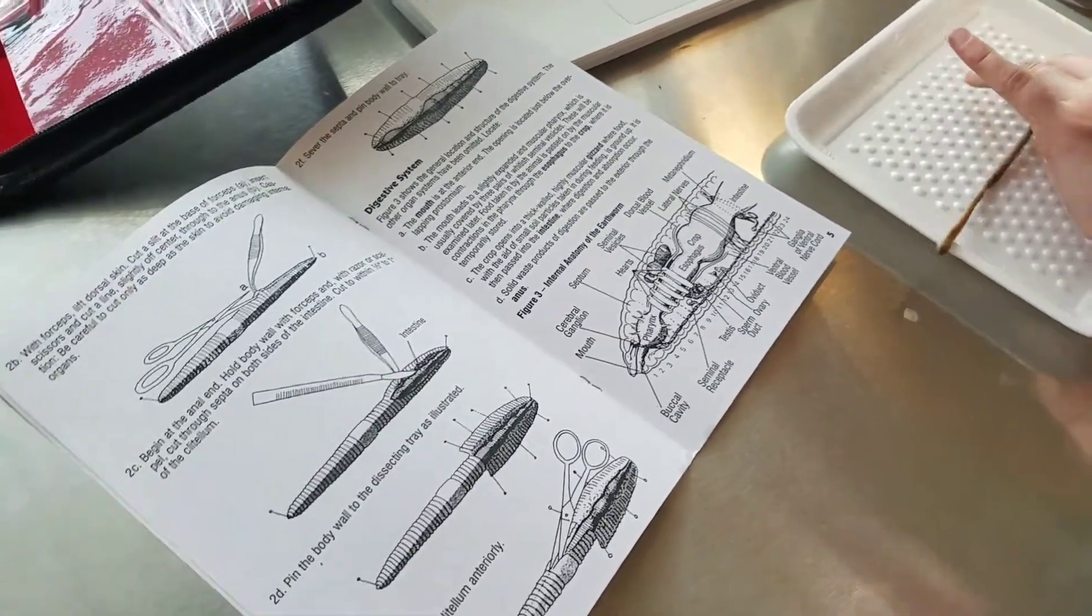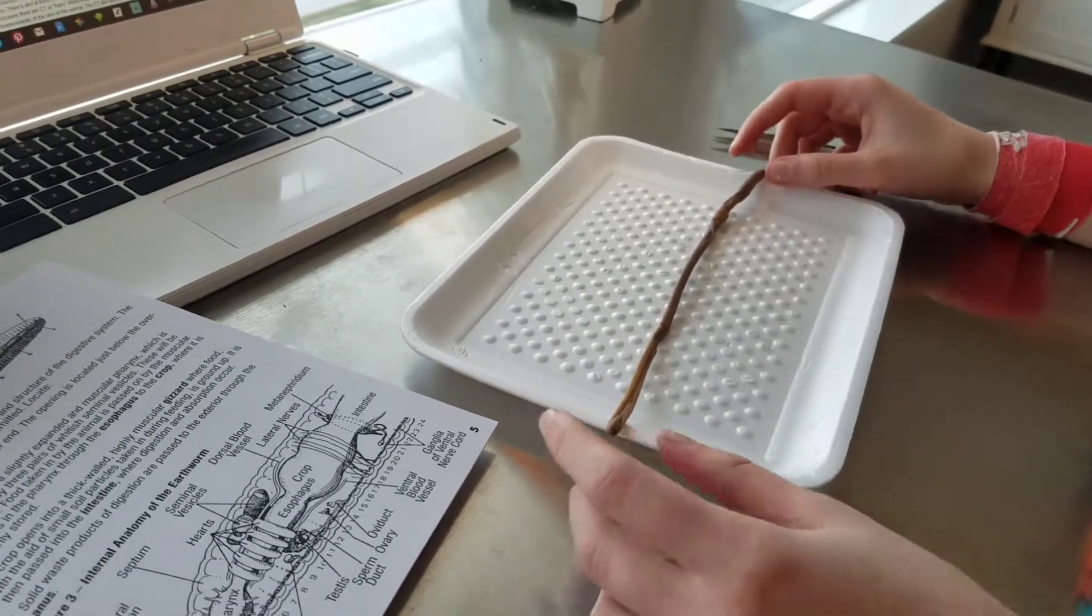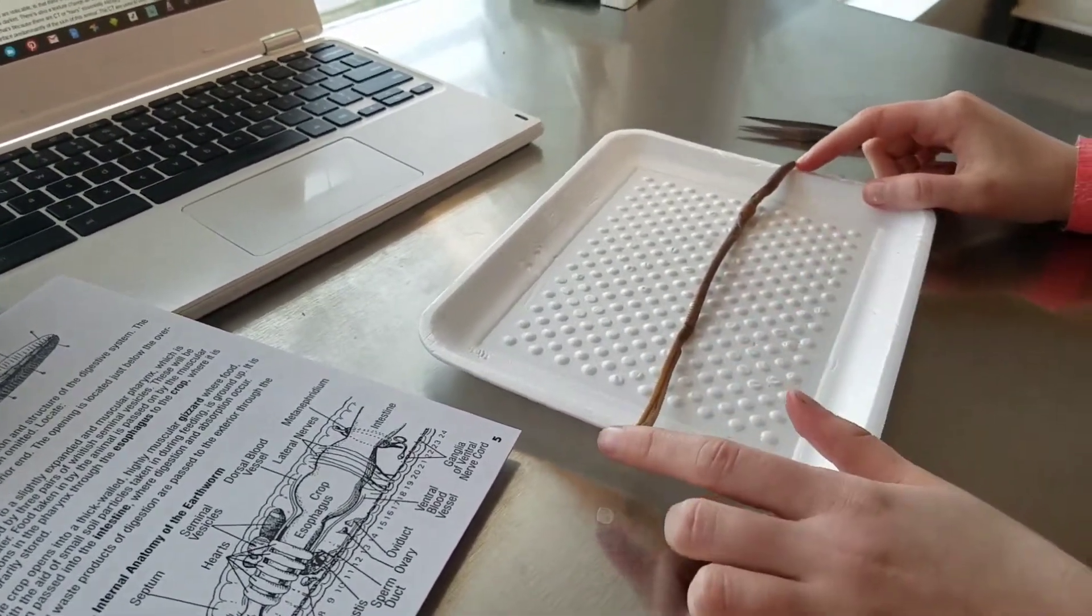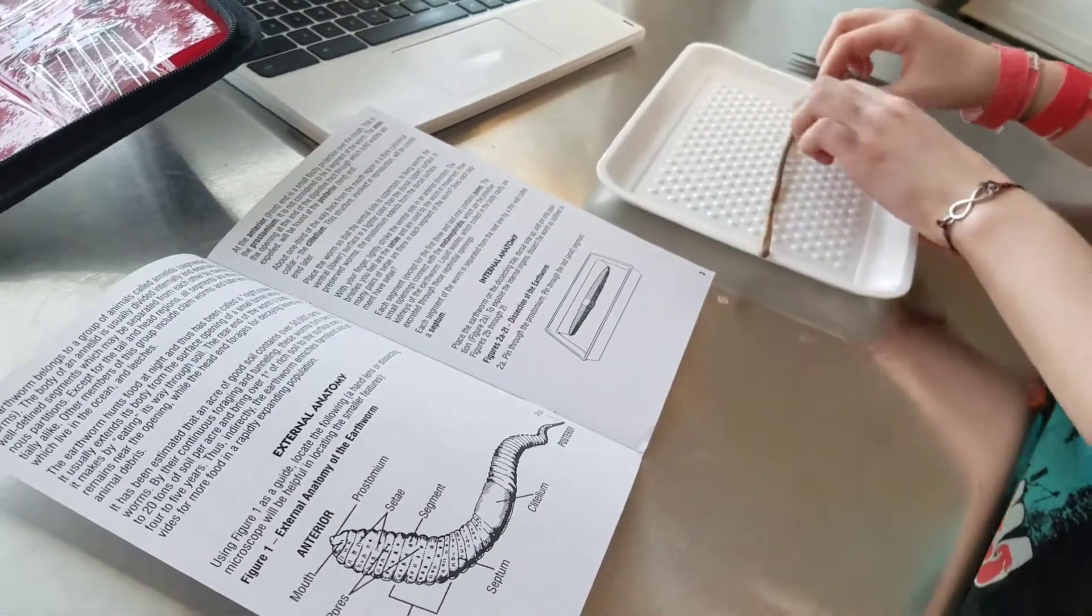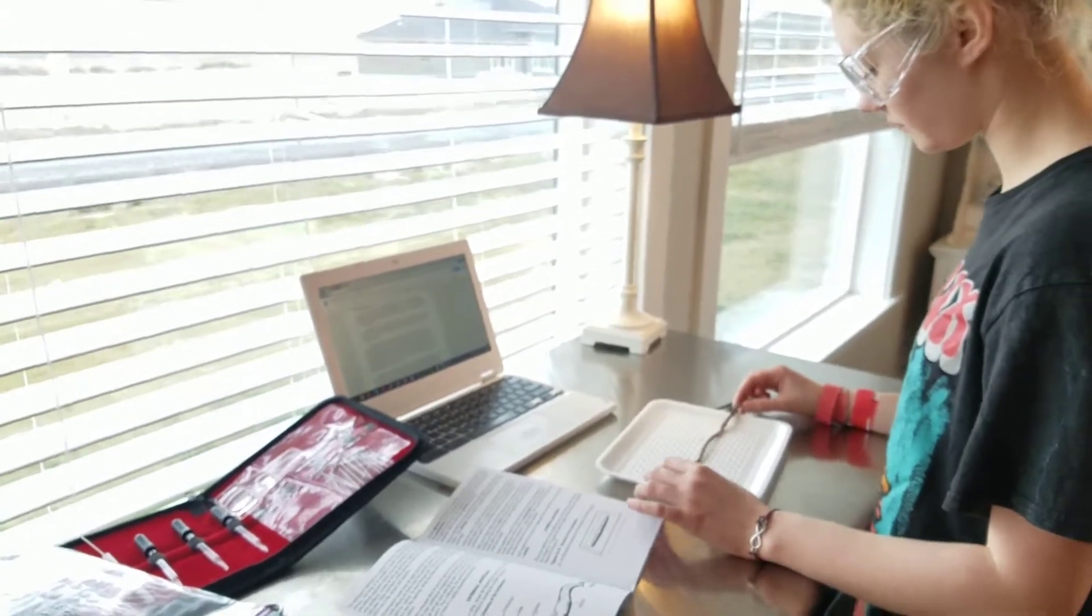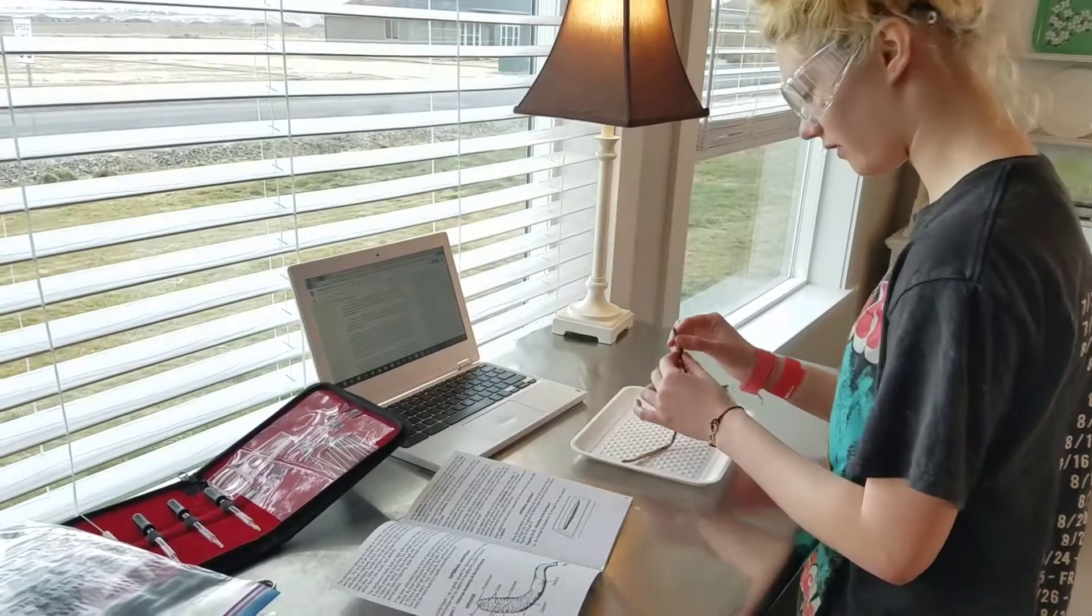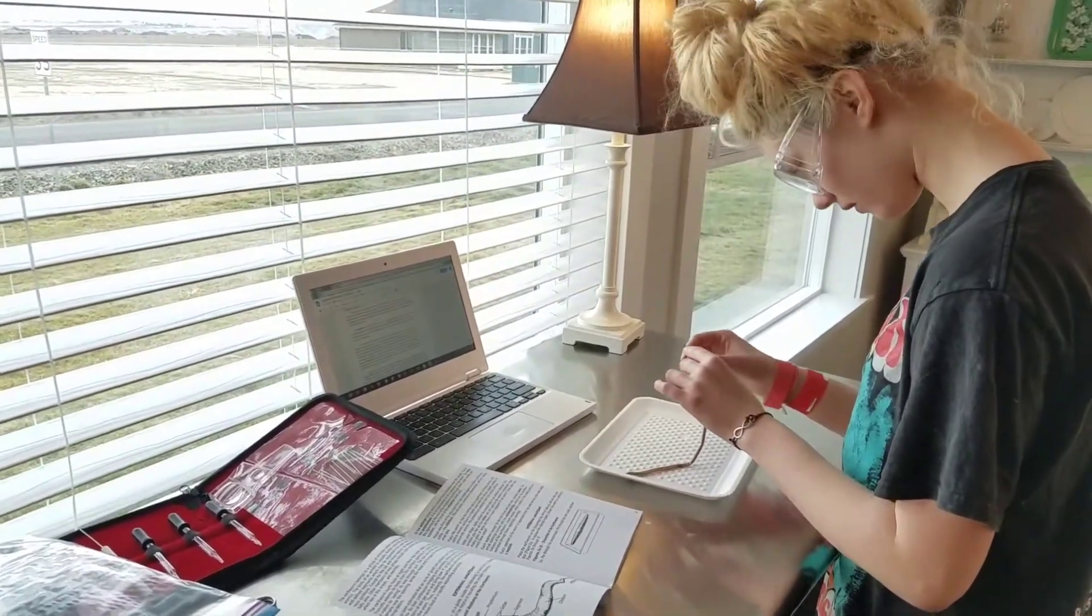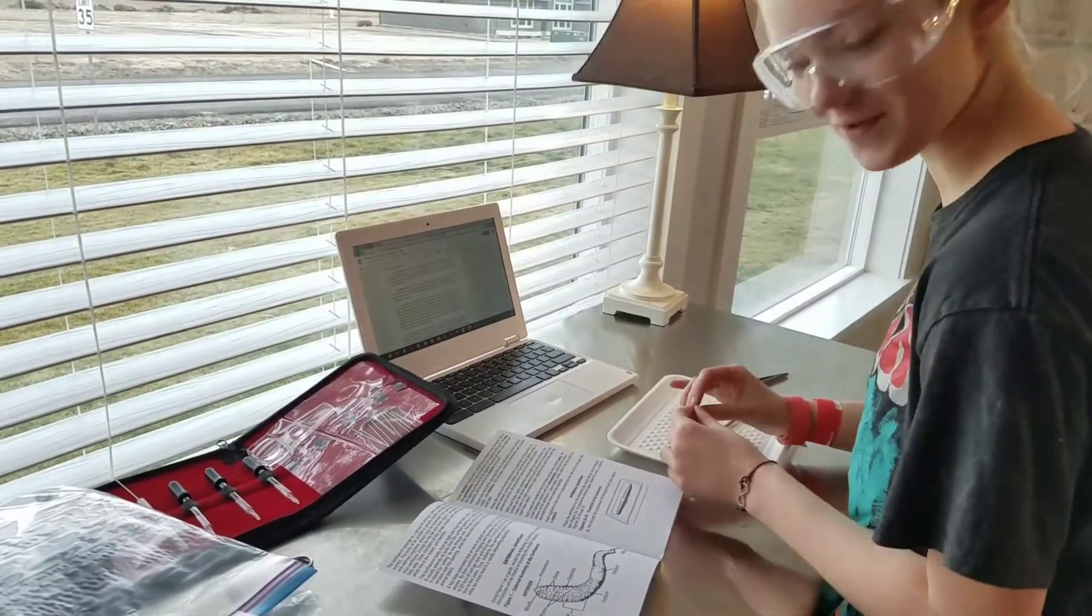There are two ends because there's a complete digestive system. This is the anterior end and this is the posterior end. The anterior is usually smaller than the posterior, and at the very front of the anterior end there's a little hole, and that is the earthworm's mouth. There's also a hole back here which is where it poops out soil.